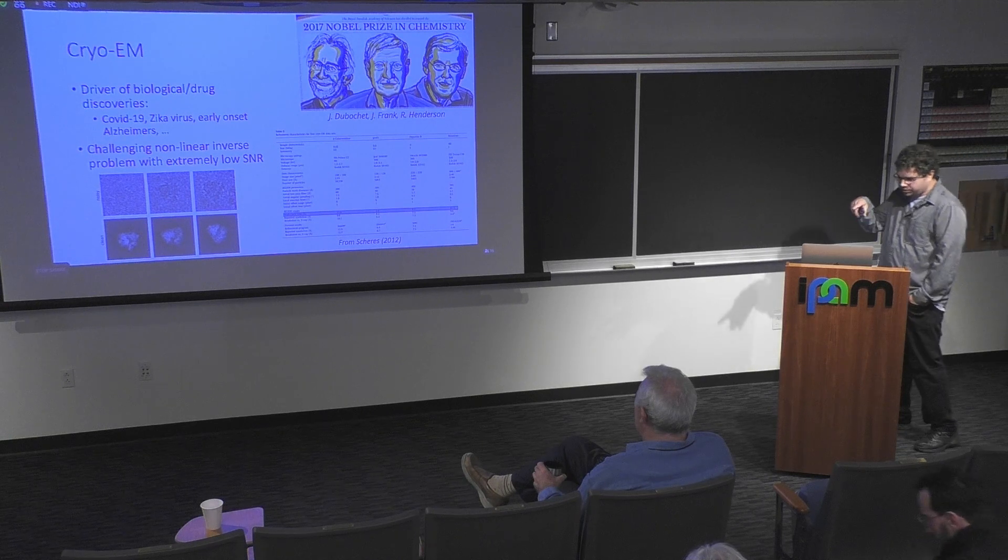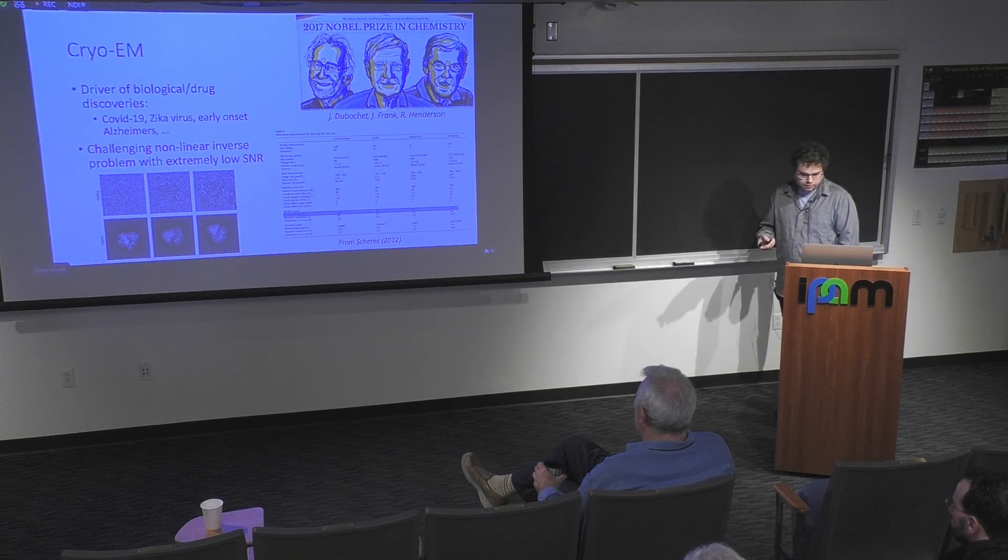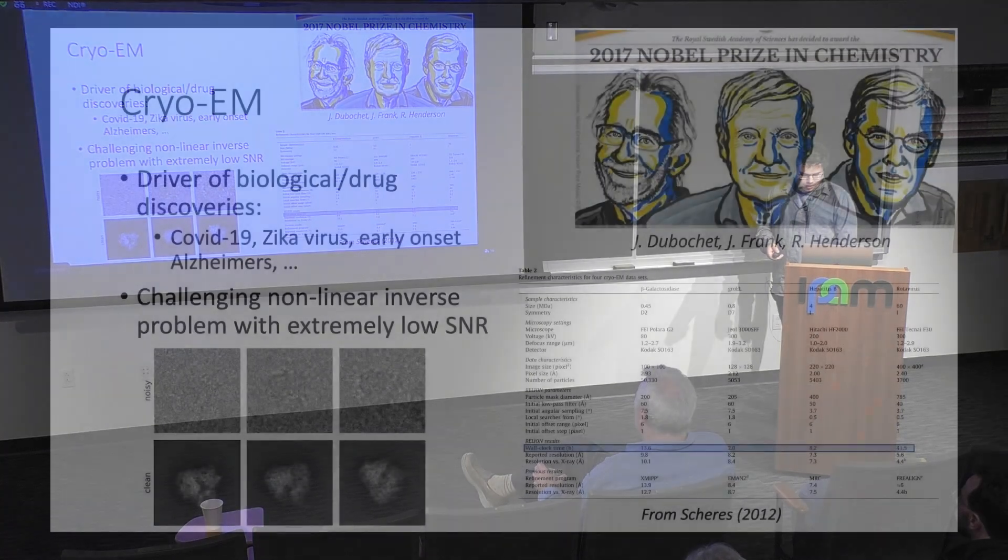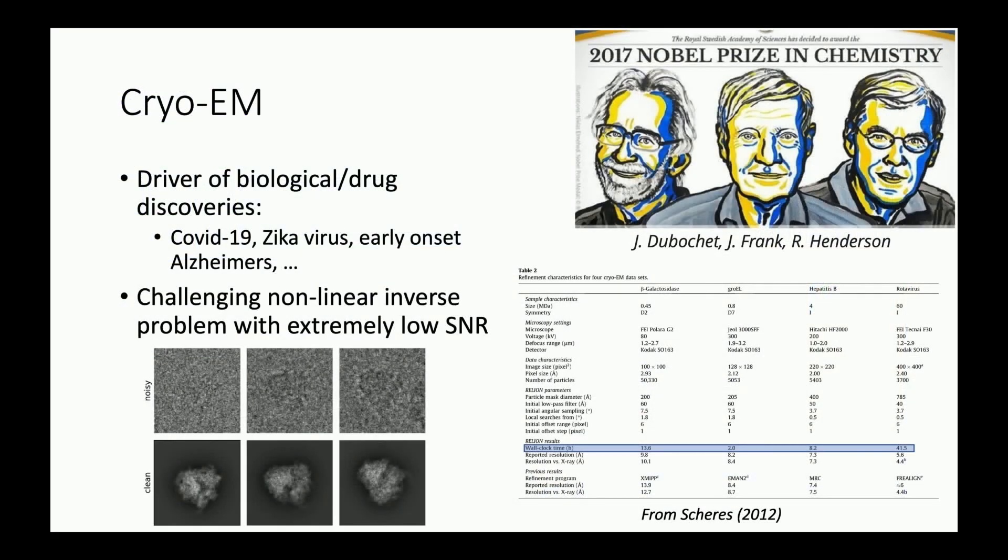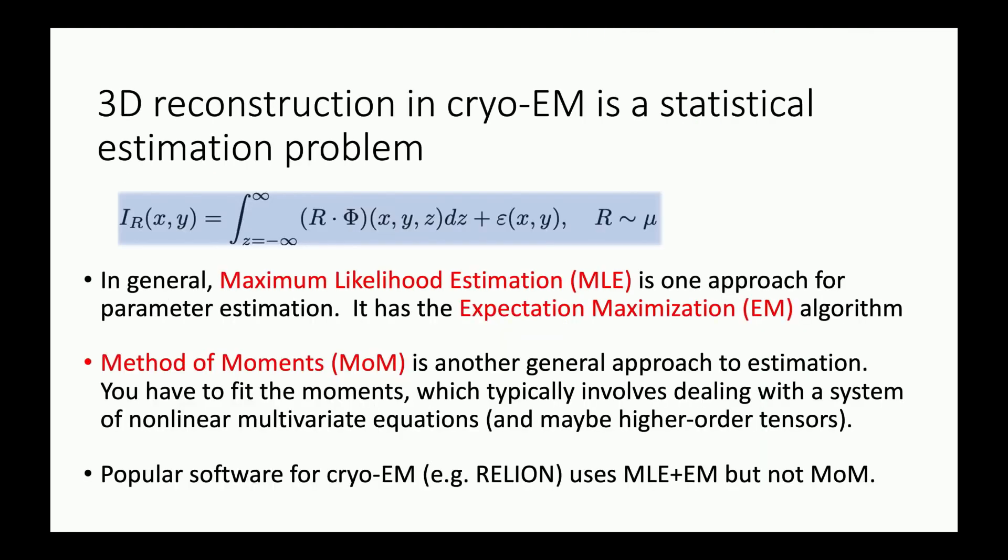Computationally it's a challenging nonlinear inverse problem with extremely low signal-to-noise ratio. This table from 2012 shows that 56 cores were used, with wall clock timings of 13.6 hours for one molecule and 41.5 for rotavirus. It's not a straightforward problem.